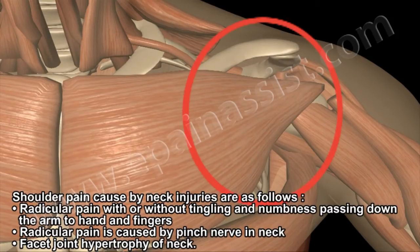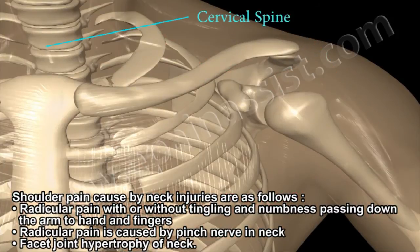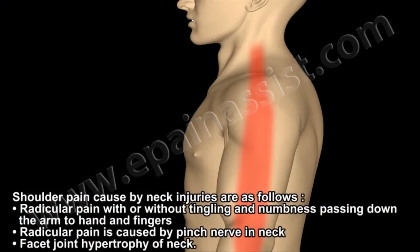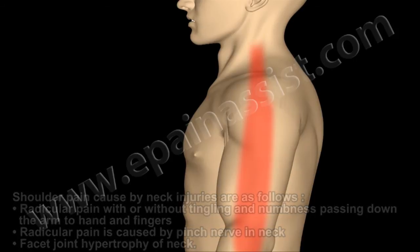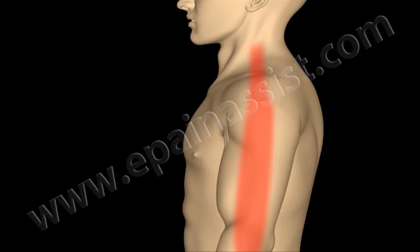Radicular pain with or without tingling and numbness passing down the arm to the hand and fingers is caused by neck injury. Radicular pain is caused by a pinched nerve in the neck. Facet joint hypertrophy of the neck also causes pain over the shoulder joint and back of the upper extremities.